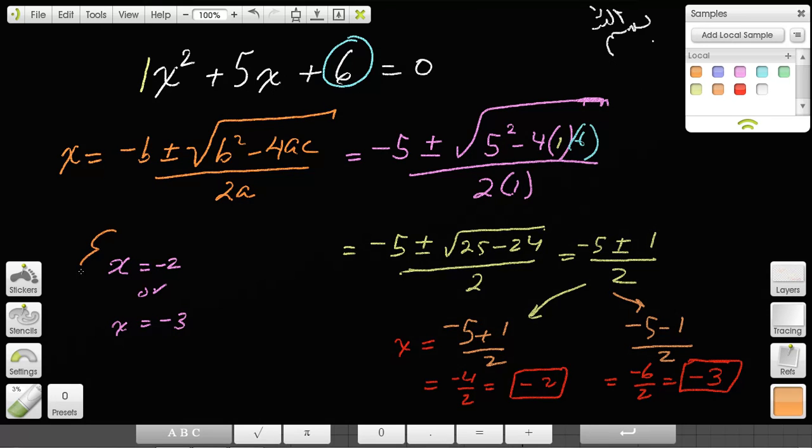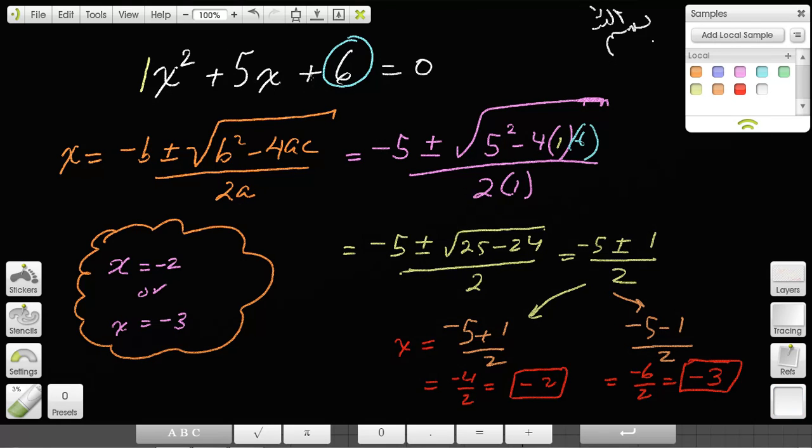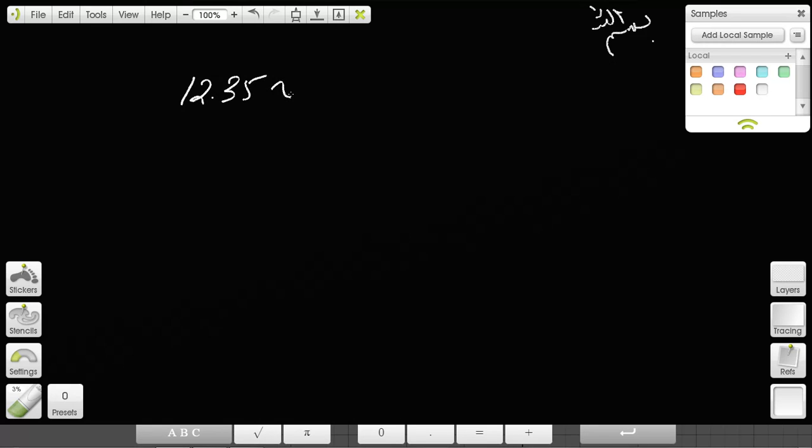The quadratic formula is probably the easier and more surefire method of solving quadratic equations. It's especially useful, for example, if you have something like 12.35x² - 0.758x - 13.01. I'm never going to factor that—I'm just going to plug it into the quadratic formula and get the answer.